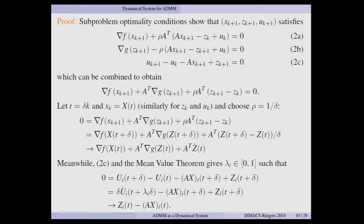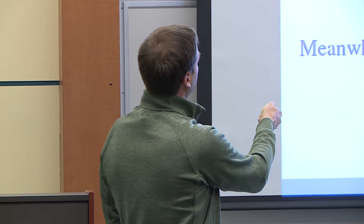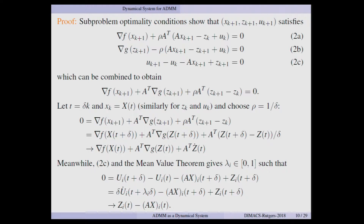How do we derive this? You write down the optimality conditions for the two core sub-problems in ADMM and the multiplier update. You basically substitute the second into the first and end up getting an equation. When thinking toward the continuous regime, this term with the difference of z's needs to look like a derivative. This suggests choosing rho as 1/delta, because then the change in z divided by delta looks like a derivative. Taking the limit, this becomes A transpose times a derivative.